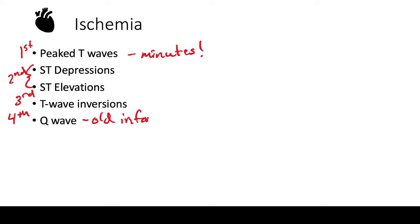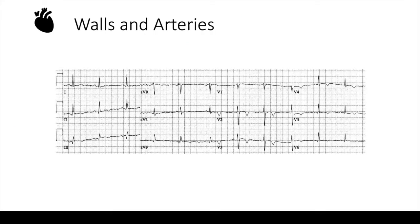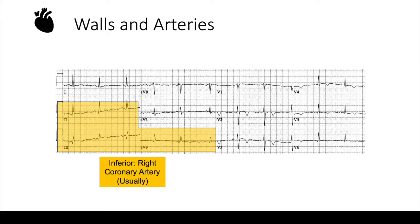Whenever we talk about ischemia, it's really important to know the different walls and the arteries that correspond to the leads on the EKG. The first leads I like to start with are the inferior leads — 2, 3, and AVF — which are supplied by the RCA. If there is a STEMI in these leads, it could mean there is RV involvement, so you want to get a right-sided EKG, specifically a V4R lead. If V4R shows ST elevations, that means the right ventricle is involved and the treatment is completely different.